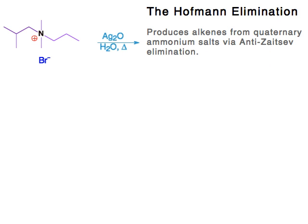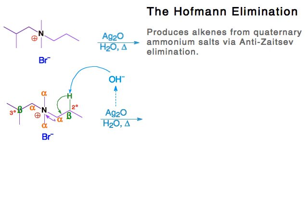The silver oxide and water produce hydroxide. You might wonder whether we could just add hydroxide directly — it turns out it works better this way, but we won't go into why.